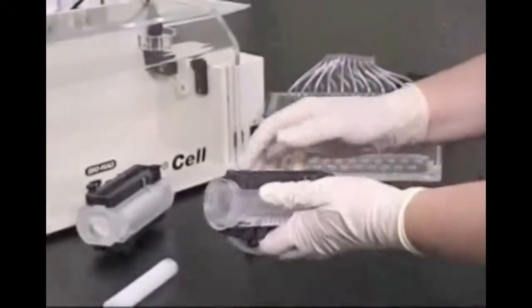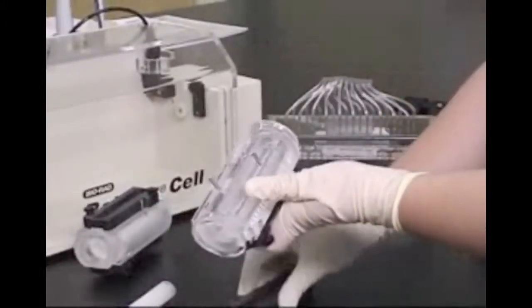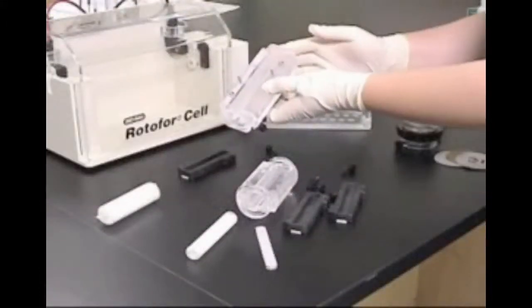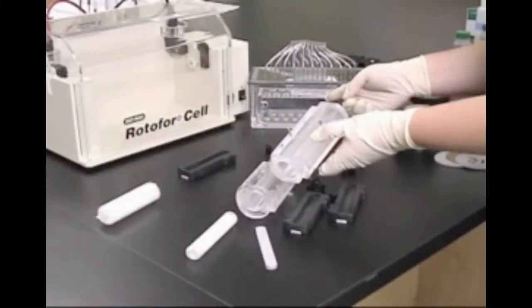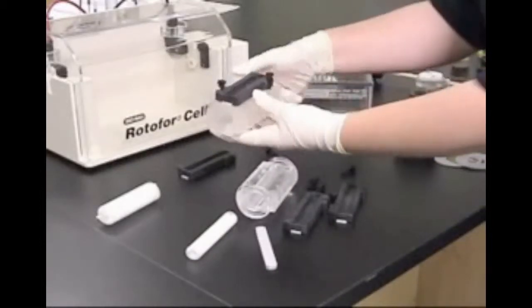The loading ports are located on the opposite side of the focusing chamber. In the mini-focusing chamber, these loading ports lay within a groove that is sealed with an additional rectangular gasket.